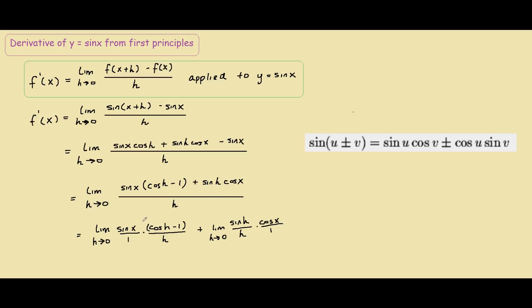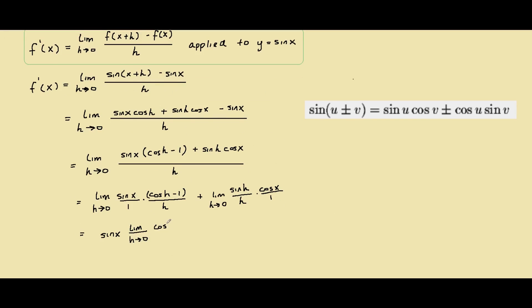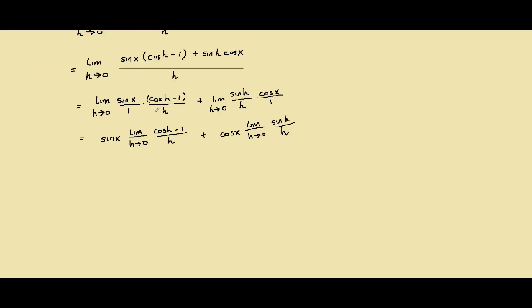Which is taking out the x terms. We can take out the x terms because we're only interested in the h terms. That's why we took out sin x and cos x. The limit does not consider them.